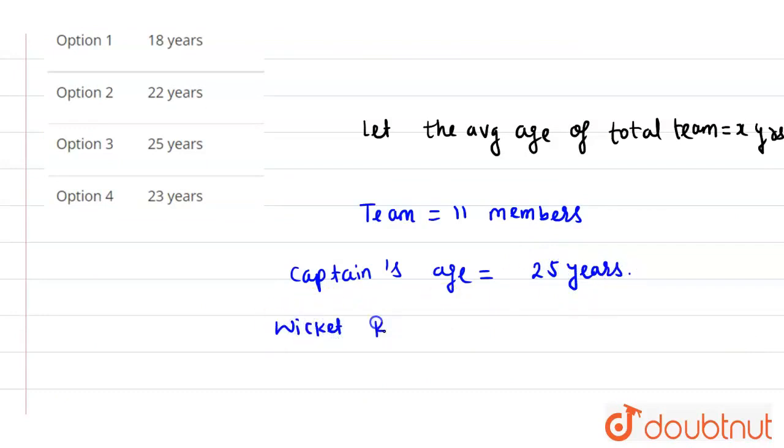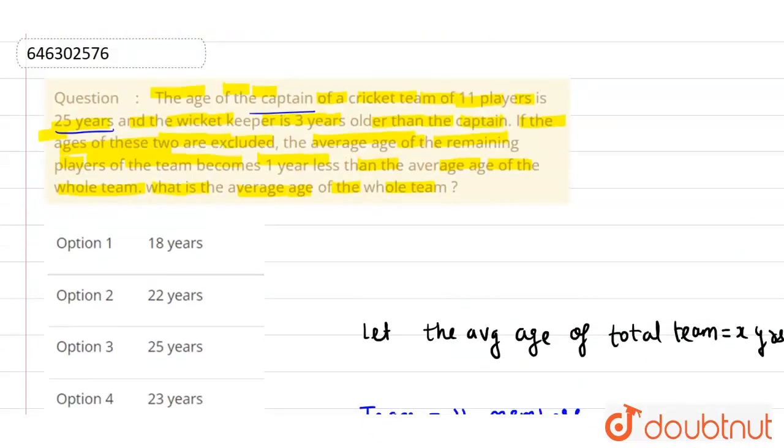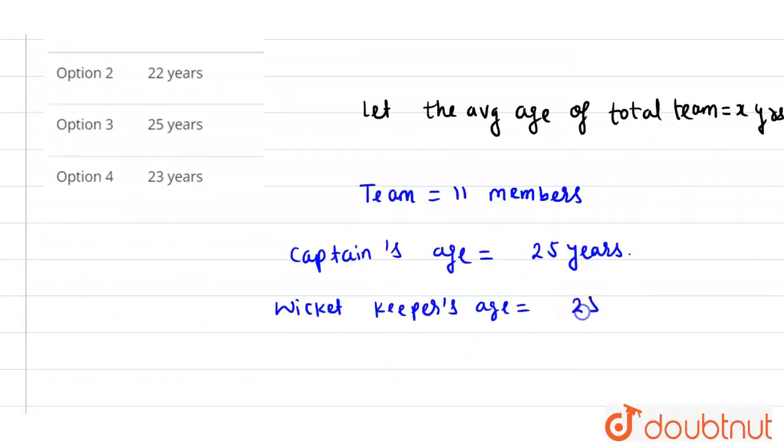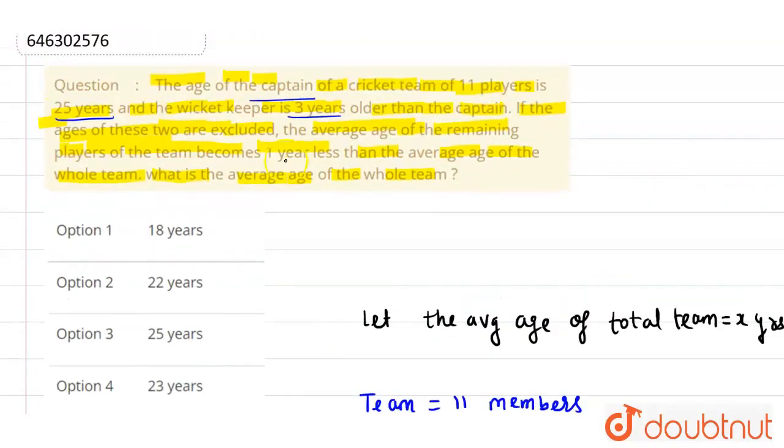Now the wicket keeper's age, what will it be? 3 years older than captain, so 25 plus 3, which is 28 years. Now if the wicket keeper and captain are excluded...